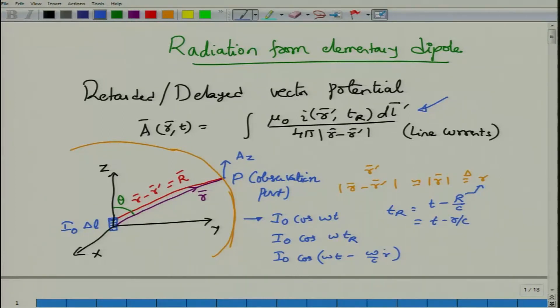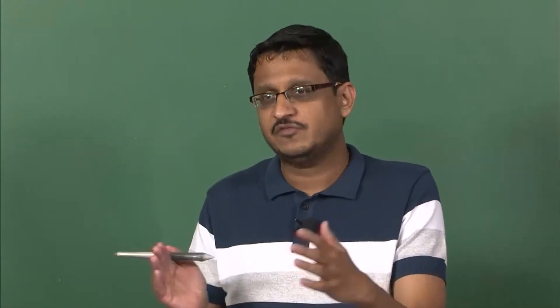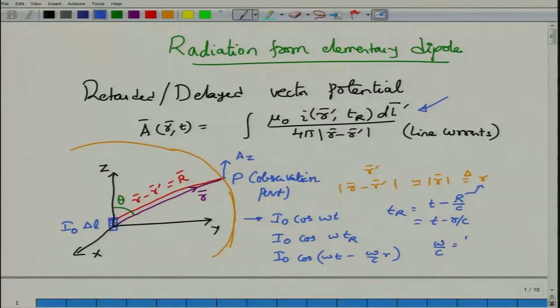All the retardation time shows up as a phase shift when the source is a sinusoidal current. So instead of thinking about retarded potentials, you can think of this as a phase shift of a sinusoidally varying source. Writing ω/c as the propagation constant k (more commonly used in antenna terminology), we have I₀ cos(ωt − kr). In phasor notation this becomes I₀ e^(−jkr), dropping the e^(jωt) term.